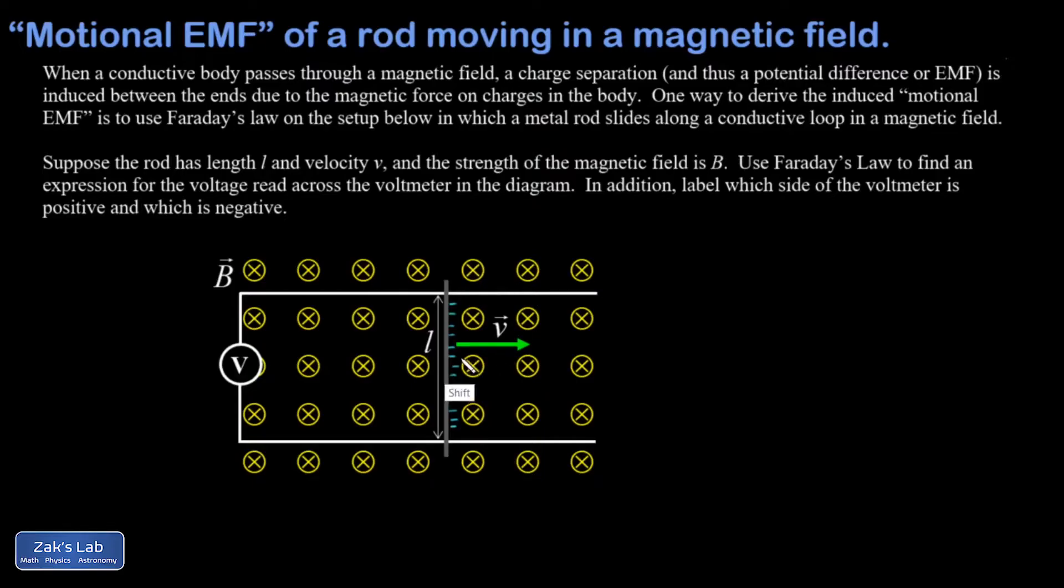That means the force on these electrons is downward. As this rod cruises along in this magnetic field, you're going to end up with electrons accumulating at the bottom end of it, and that creates a negative potential there. You're going to end up with a deficit of electrons at the positive end of it.